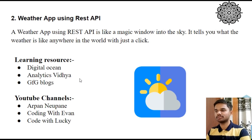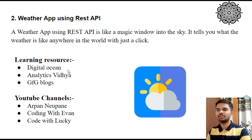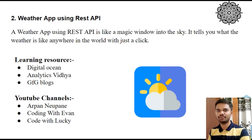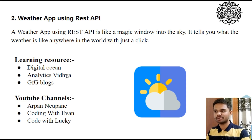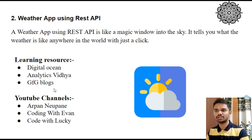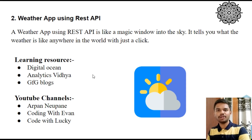The next project for the month of February is a weather app using REST API. This project can help you track real-time weather information to plan whether to go out or stay in during the rainy season. The learning resources before implementing this project are available on websites such as Digital Ocean, Analytics Vidhya, GFG blogs, and Medium blogs. Analytics Vidhya has solutions to almost every project I'll be demonstrating, so these names will repeat.